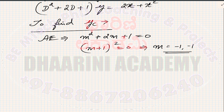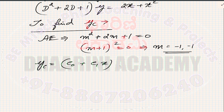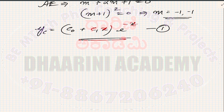The roots are real and repeated twice, so this is Case 2. Therefore yc = (c₀ + c₁x)e^(−x). My next objective is to find yp. We write the standard equation yp = φ(x)/f(d), where φ(x) = x² + 2x and f(d) = 1 + 2d + d².